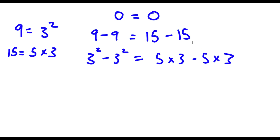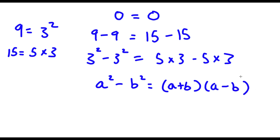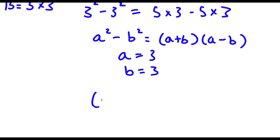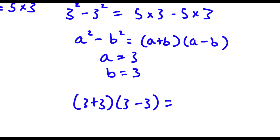So now I have 3 squared minus 3 squared is equal to 5 times 3 minus 5 times 3, and this is also going by the rules of mathematics. Now an important property of algebra is that a squared minus b squared equals a plus b times a minus b. In this case, a is equal to 3 and so is b. So now I have 3 plus 3 times 3 minus 3.